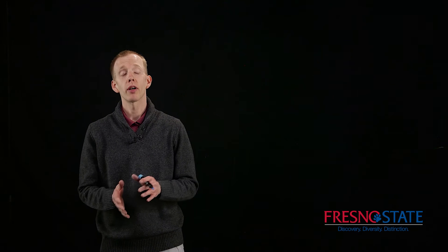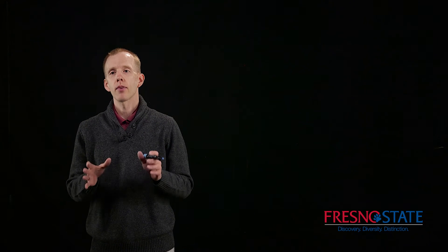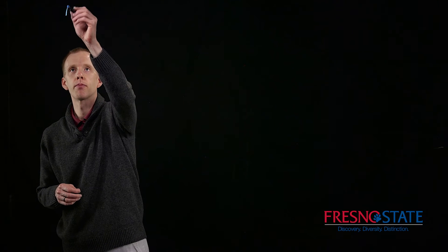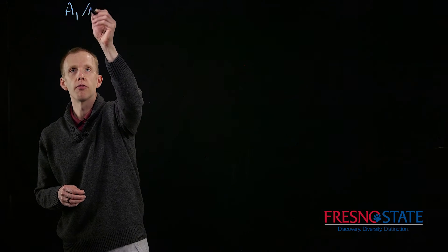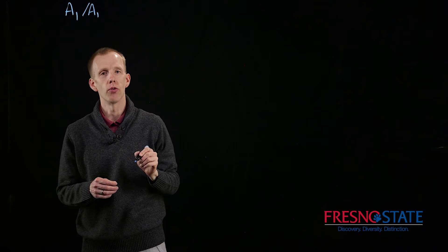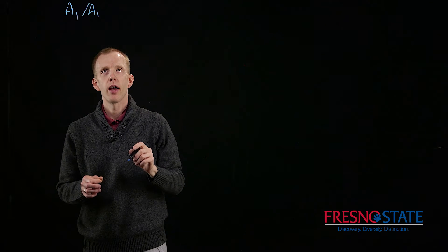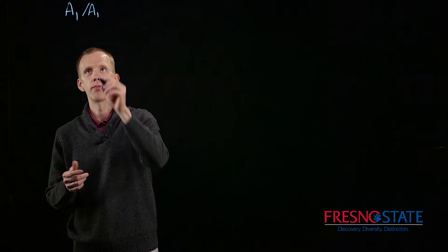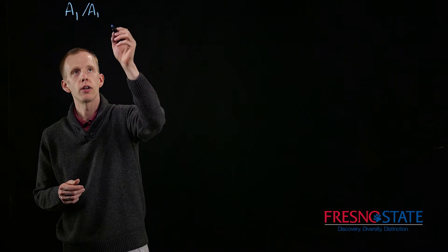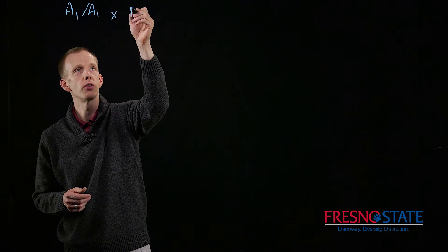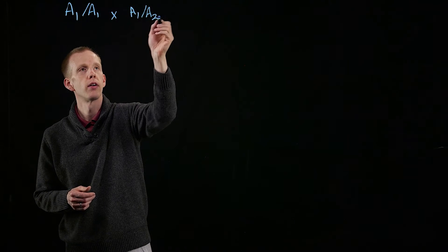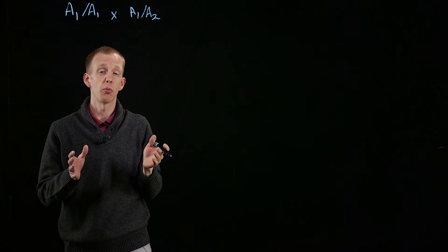I want to briefly walk you through the nomenclature of a few different types of crosses that geneticists use. Most crosses start with purebreeding or homozygous individuals. They may have, for example, A1 over A1. We've already looked at a couple of different types of crosses using hybrids. So here's a homozygote. If we cross a homozygote by a heterozygote, that doesn't have a particular name.